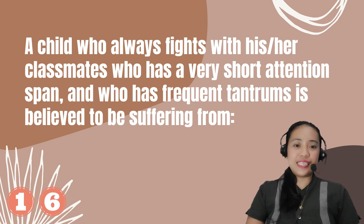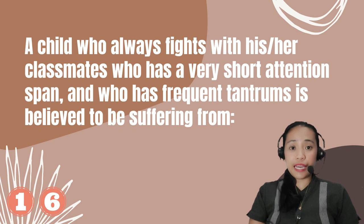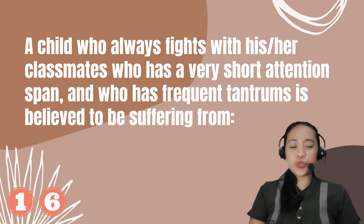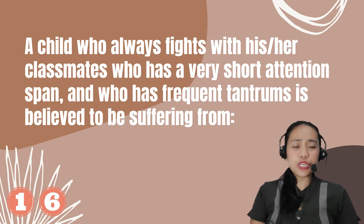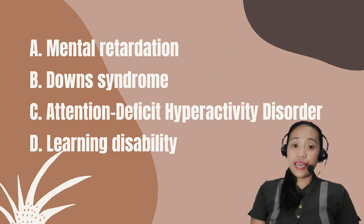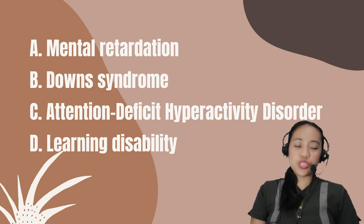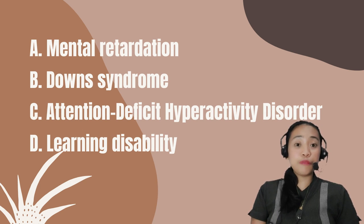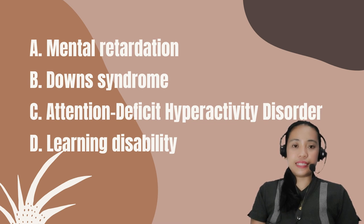Number 16. A child who always fights with classmates, has a very short attention span, and has frequent tantrums is believed to be suffering from: A. Mental retardation. B. Down syndrome. C. Attention deficit hyperactivity disorder. D. Learning disability.